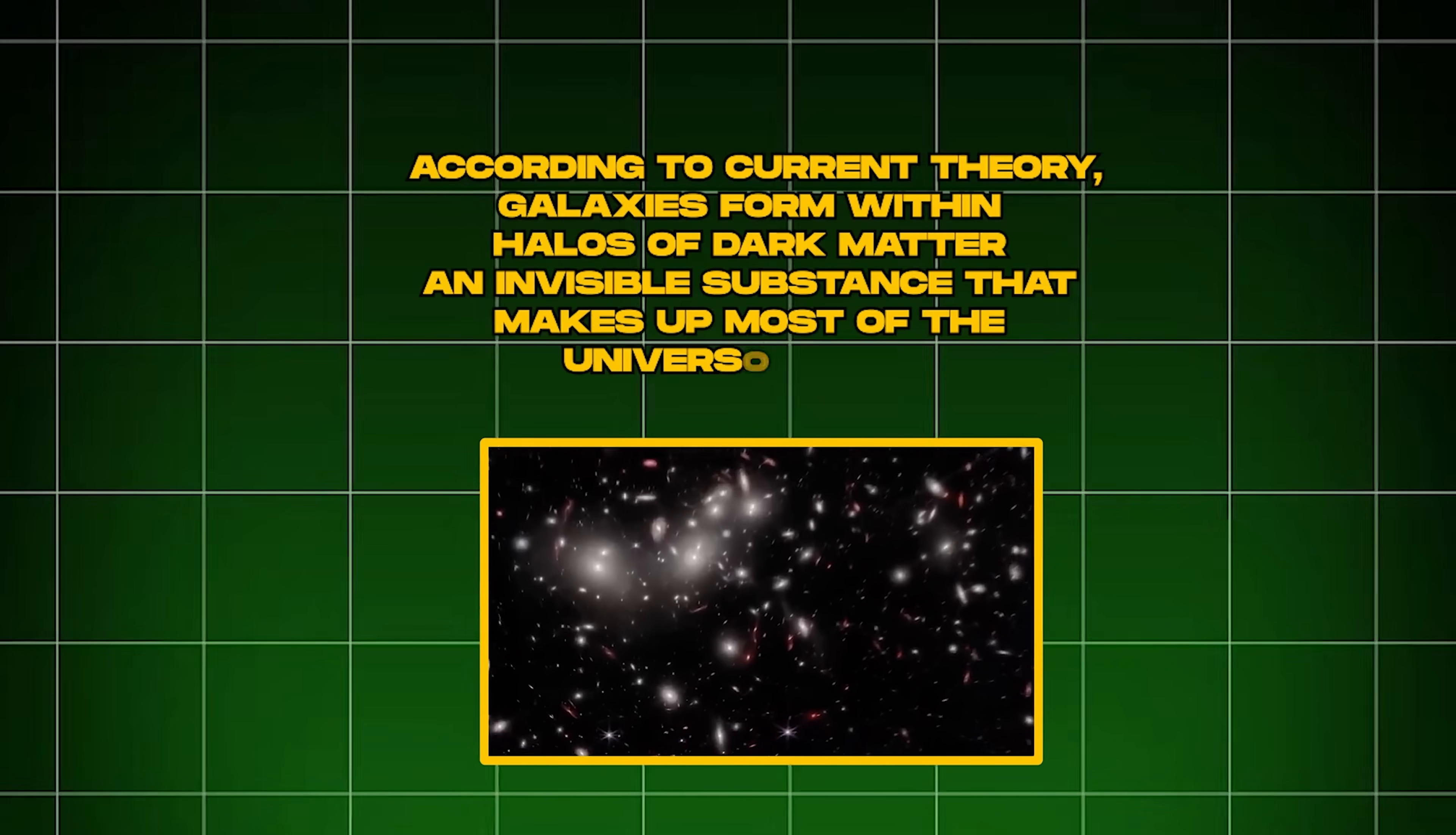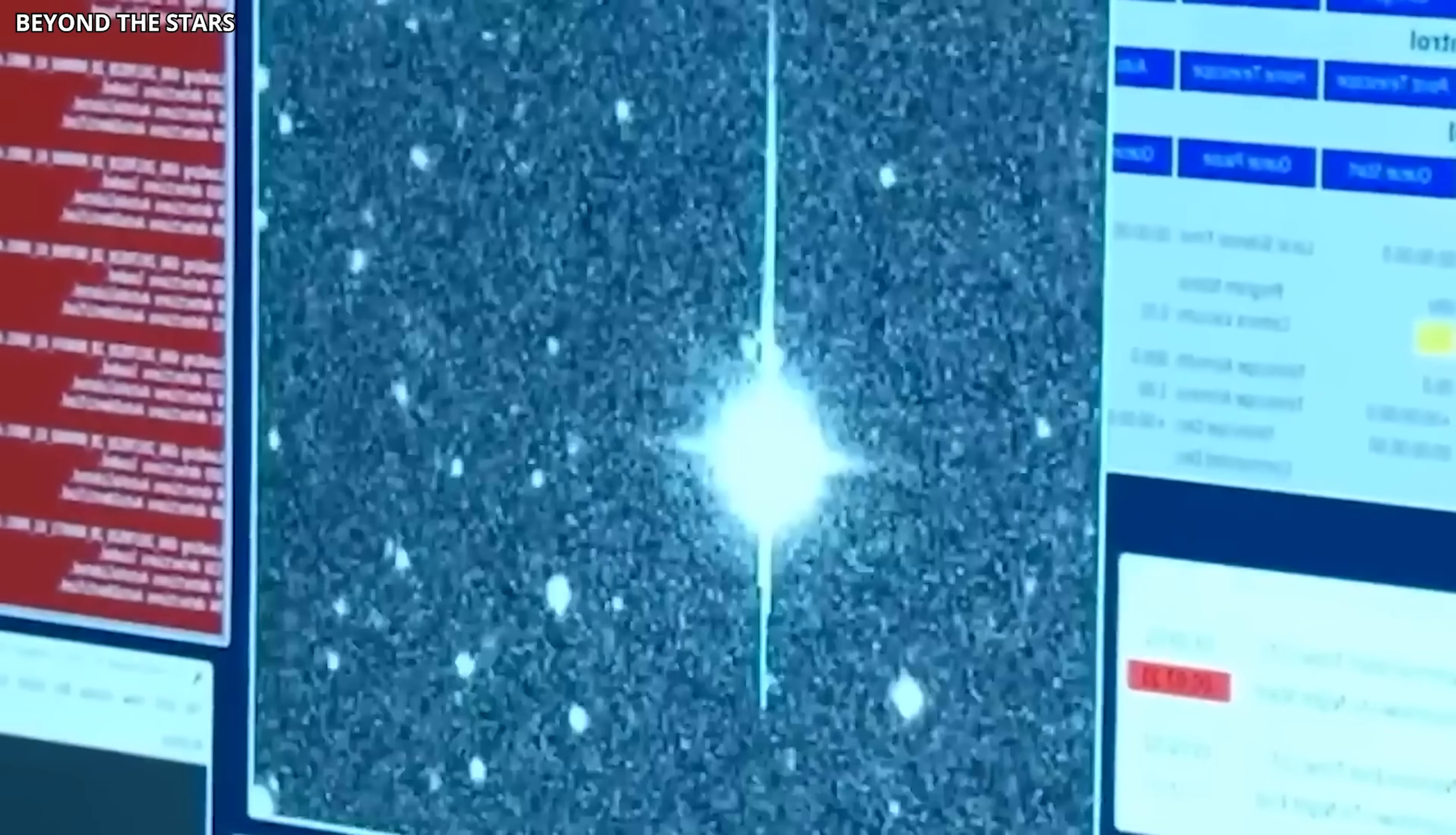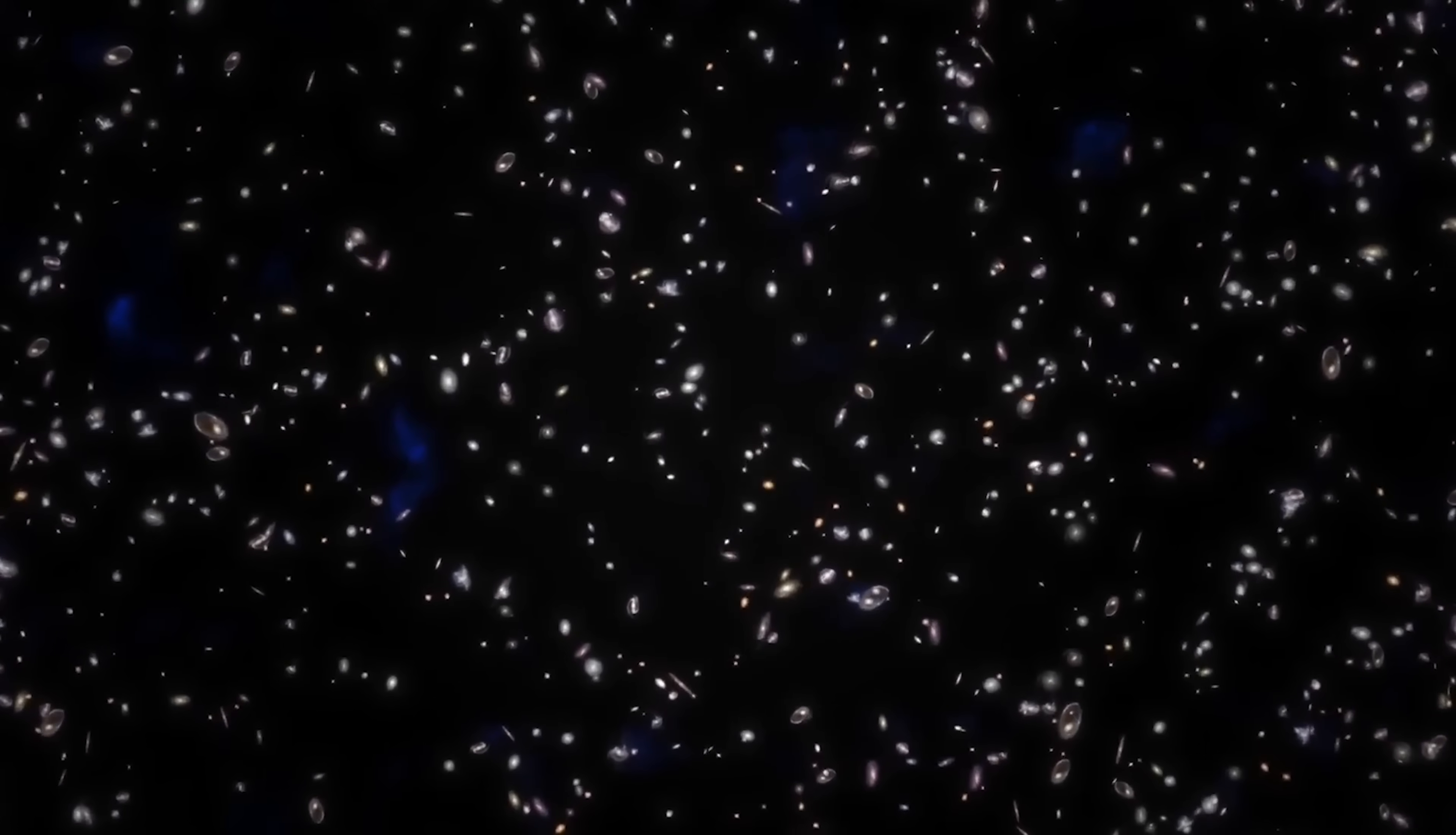According to current theory, galaxies form within halos of dark matter, an invisible substance that makes up most of the universe's mass. Normal matter falls into these halos, where stars and galaxies gradually form. Small galaxies should appear first, merging over billions of years into larger ones.